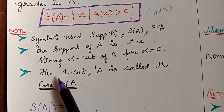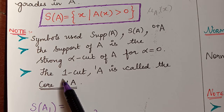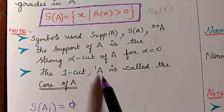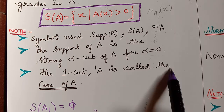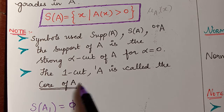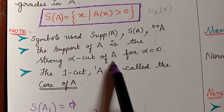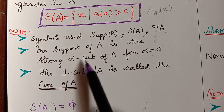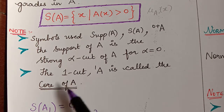We have another property: if the value of alpha is equal to 1, then the 1-cut is called the core of A.